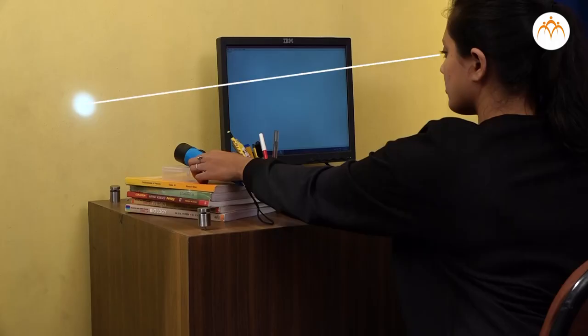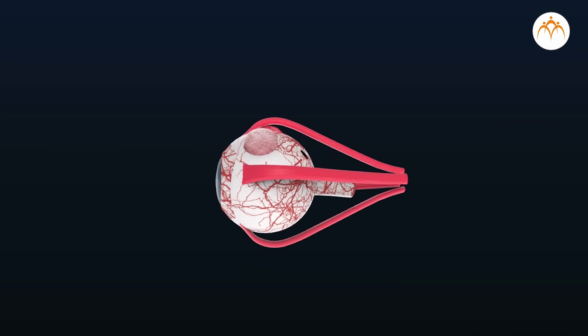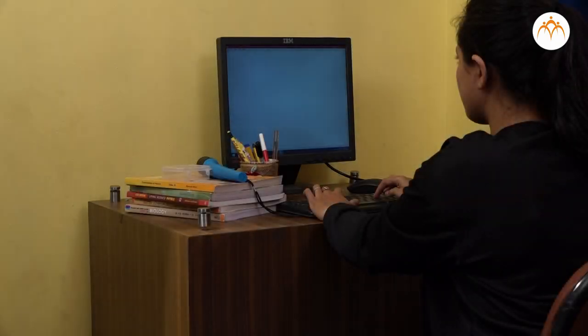Light bounces off tiny particles of smoke and is reflected back into our eyes. That is how we see things. Light reaches our eyes and due to biochemical reactions in our eyes, we can see things or we can feel light. Objects can be seen only when light is present.